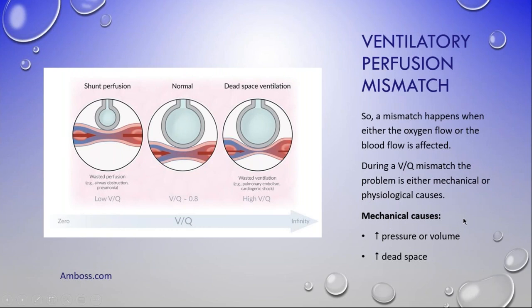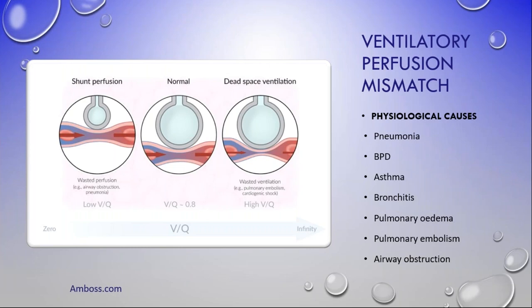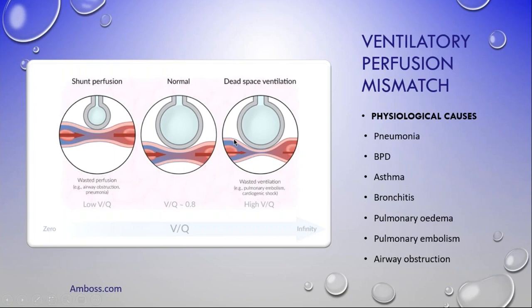Physiological causes of VQ mismatch include pneumonia, which produces exudate around the alveolus; BPD or bronchopulmonary dysplasia, which causes tears and thickening; bronchitis, which is inflammation and exudate in the bronchi; pulmonary edema from vigorous resuscitation causing volutrauma or barotrauma, often presenting with pink secretions; a pulmonary embolus, which is a blockage in the capillaries preventing gaseous exchange; and airway obstruction.